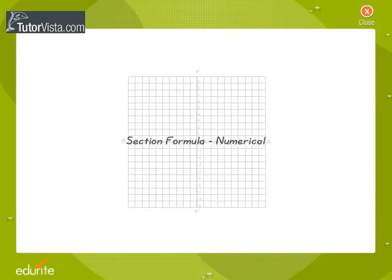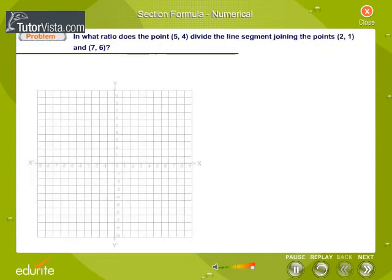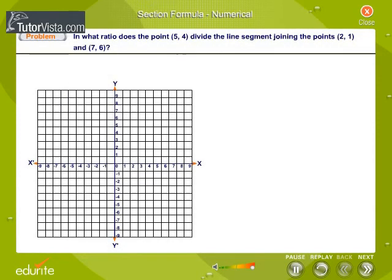Numerical. In what ratio does the point (5,4) divide the line segment joining the points (2,1) and (7,6)?